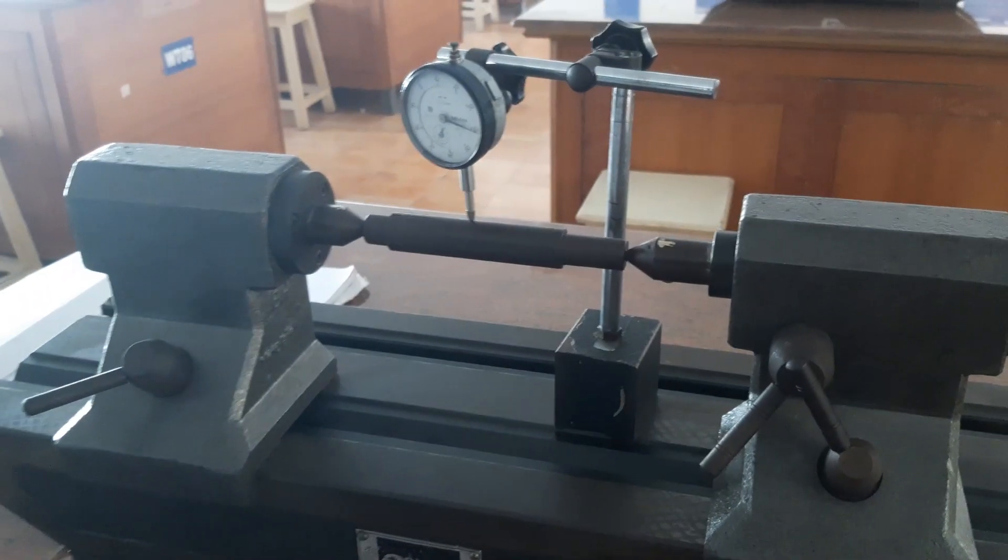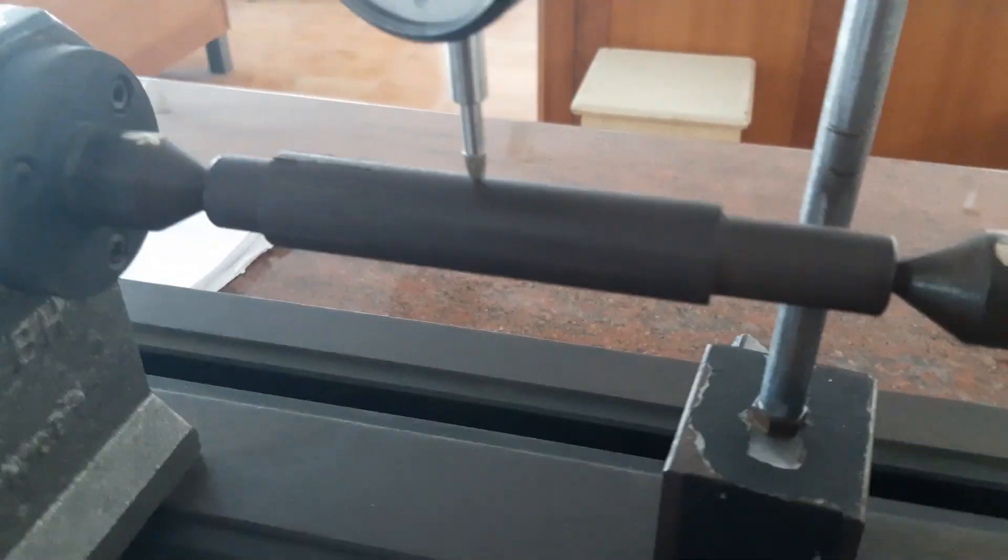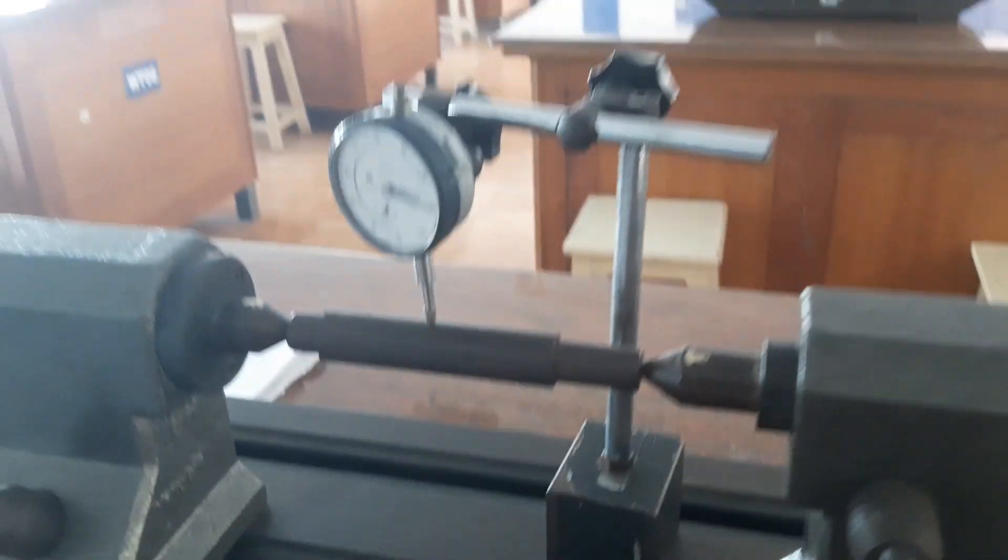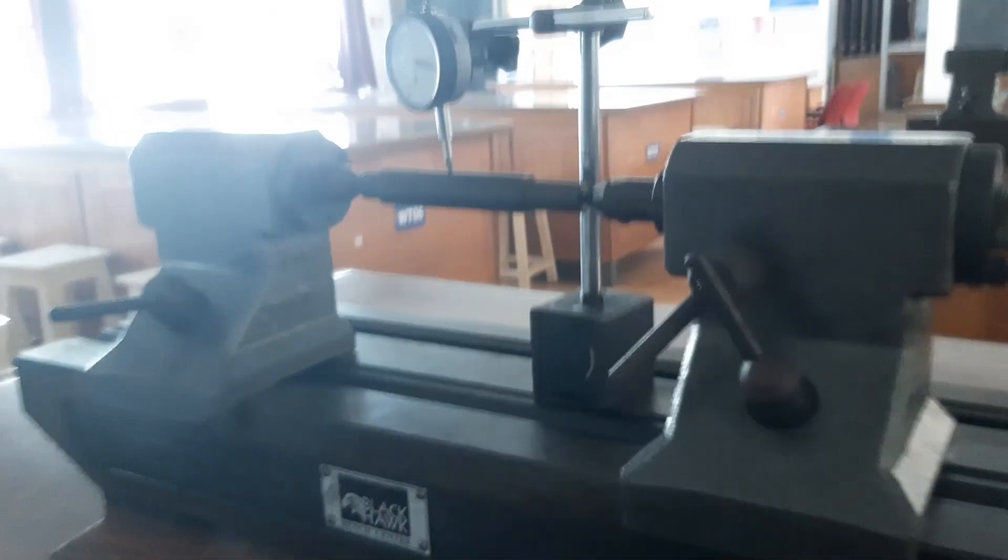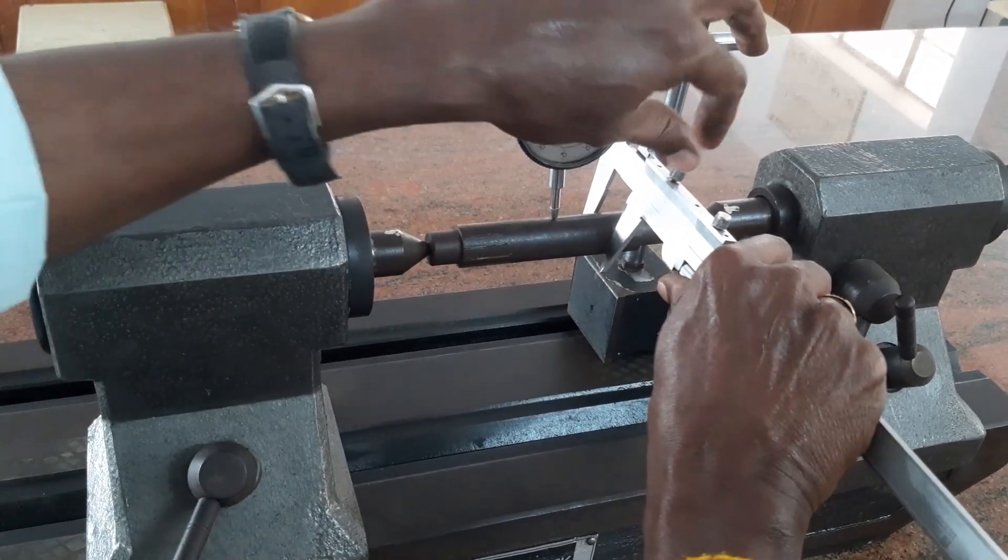We have to place the workpiece like this in the bench center and place the dial indicator on the workpiece. Now measure the diameter of the workpiece.